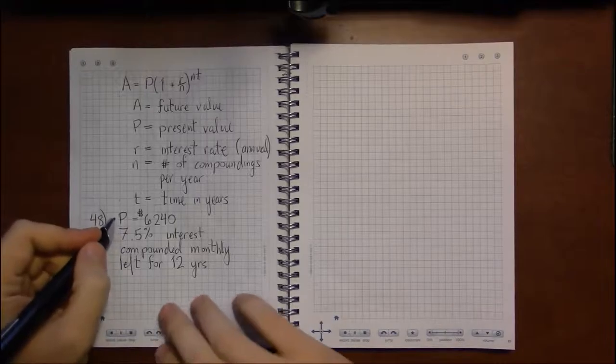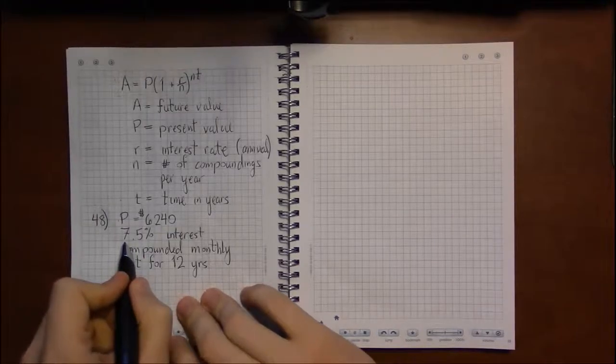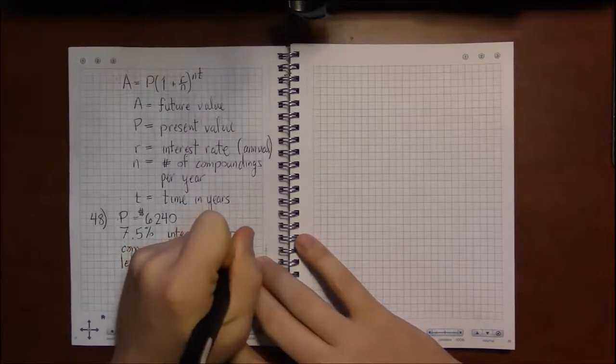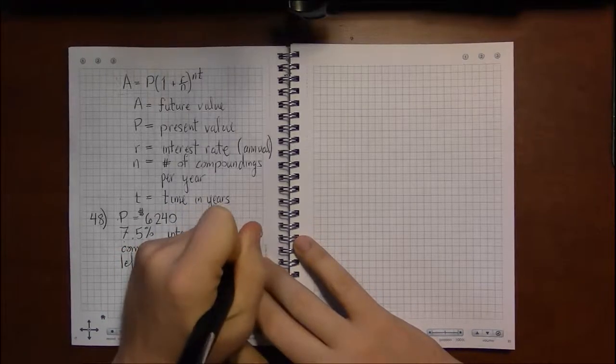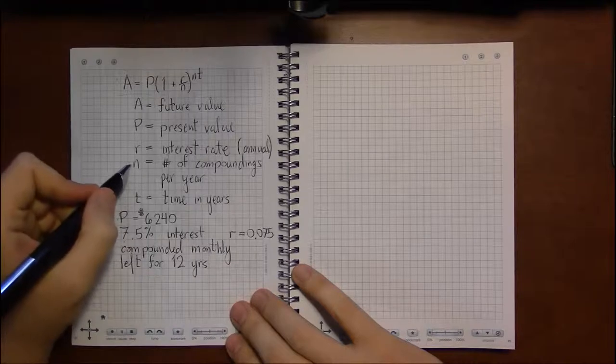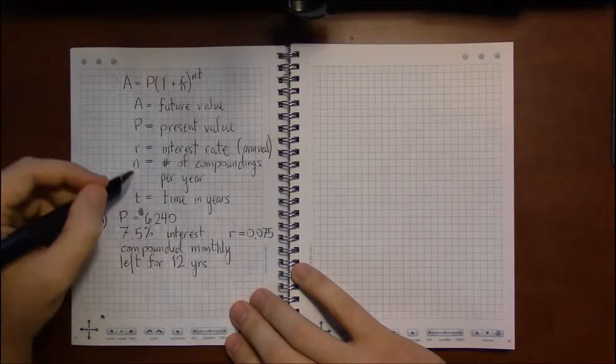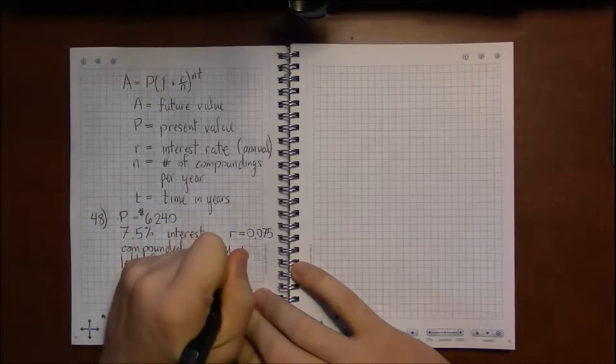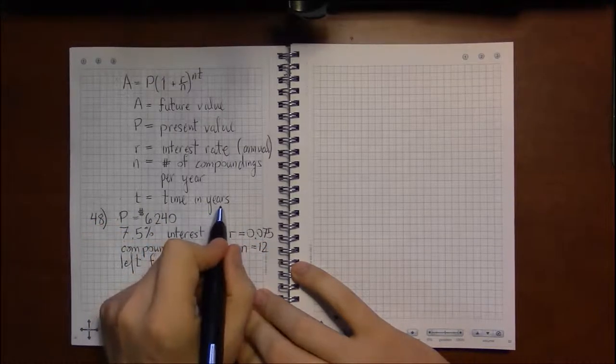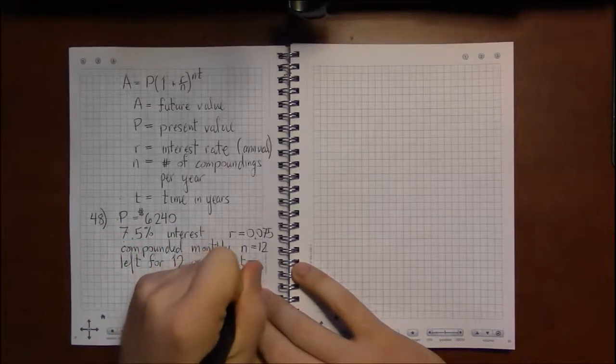Well, they've already told us the present amount, that P is equal to 6,240. Telling us the interest of 7.5% tells us that R is 0.075. Compounded monthly, this means that the number of times we're going to compound each year is the same as the number of months. We're going to compound once per month, so N is going to be 12. And the time, how long we're leaving the money in the account is 12 years.